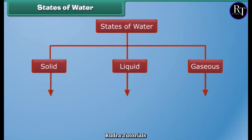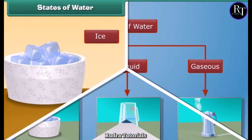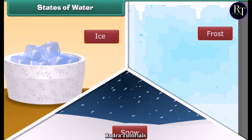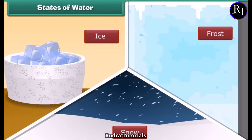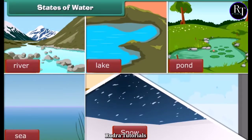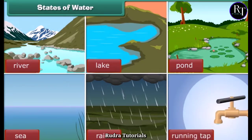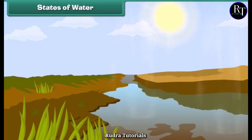Water exists in three states: solid, liquid, and gaseous. Ice, snow, and frost are examples of water in the solid state. You see liquid water in rivers, lakes, ponds, the sea, when it rains, and in water coming out of a tap. Water vapor is a gas in the air — you can't see it because it is invisible.